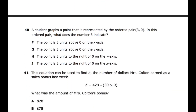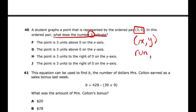Question 40: A student graphs a point represented by the ordered pair (3, 0). In our ordered pairs, formatted as (x, y), the first number indicates how far we go along the x-axis — the 'run' — and the second number y indicates how far we go along the y-axis — the 'rise' or 'jump.' So three is going to be my x-axis value, or my run.